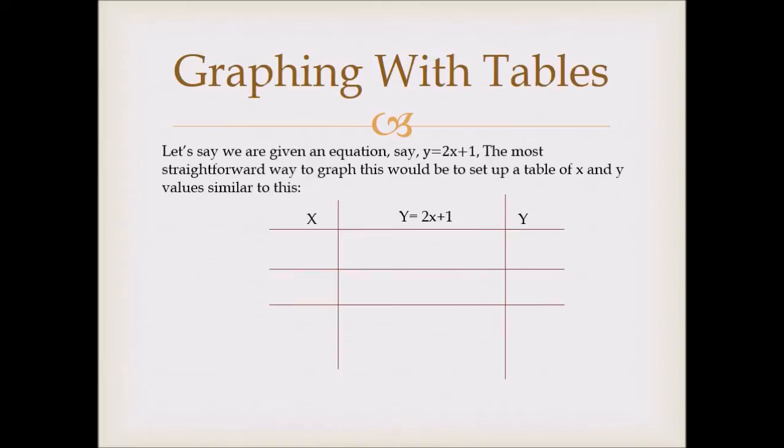You might have seen it written like this. Some professors like to leave out that middle column where it says y equals 2x plus 1, and they just leave it as x and y. I like to add in the middle column, that way we can see what's going on per point that we're using. So we plug in our x values, and it could be any value that you want. I'm going to pick negative 1, 0, and 1.